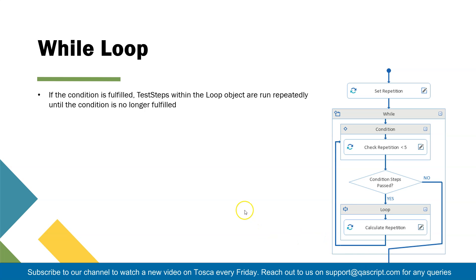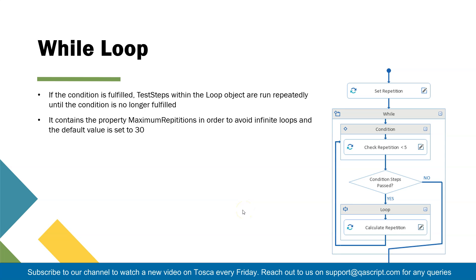Another important thing to note is that the while loop also has a property called maximum repetitions. This is to avoid infinite loops — Tosca by default sets this value to 30, but you can change it. So that's what the while loop is about.